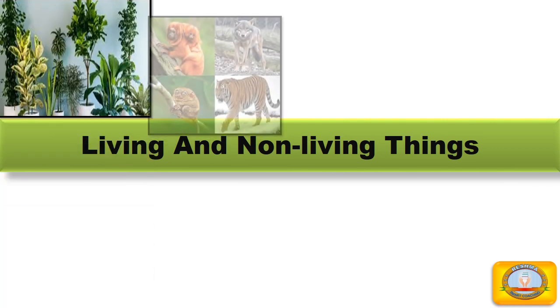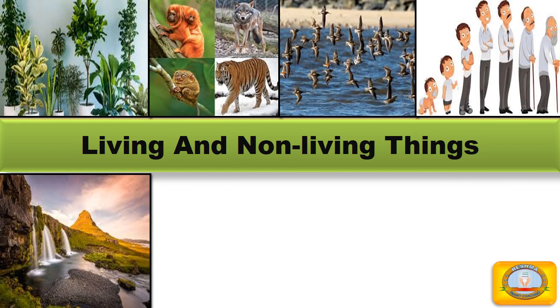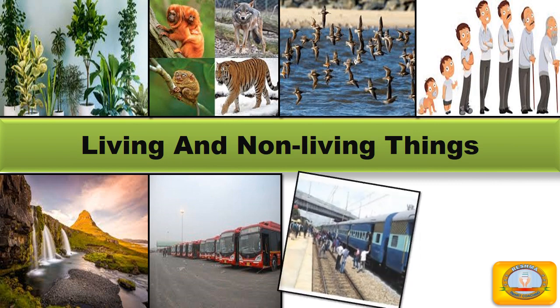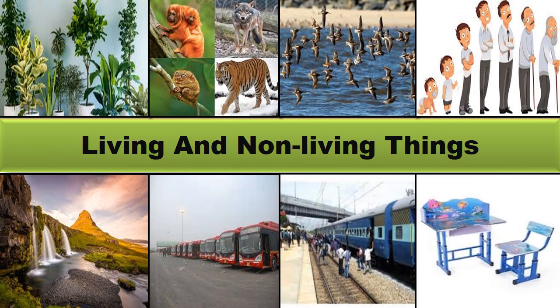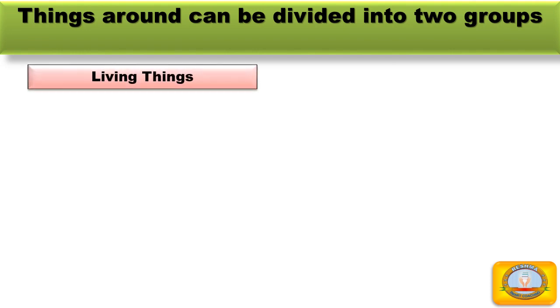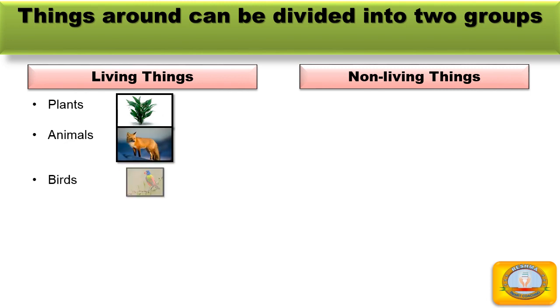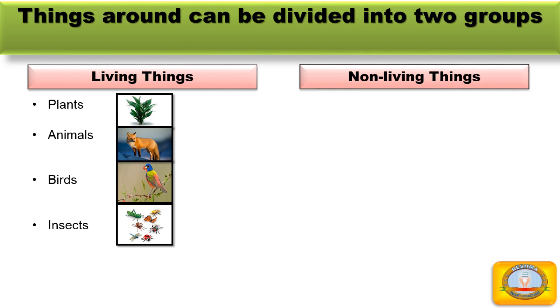Hello children, welcome to my YouTube channel. I am Reshma and our today's topic is living and non-living things. Things around us can be divided into two groups: living things and non-living things. Plants, animals, birds, insects, and human beings are living things.